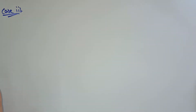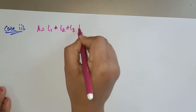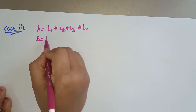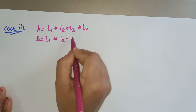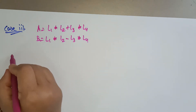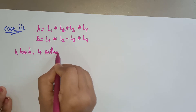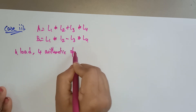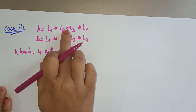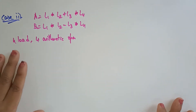Now coming to Case 2. What I am taking here is execution of the same program: A = L1 × L2 + L3 × L4, and B = L1 × L2 − L3 × L4. So here, how many load operations are there? There are 4 load operations as well as 4 arithmetic operations — 2 multiplications, 1 addition, and 1 subtraction. So total 8 instructions are there.